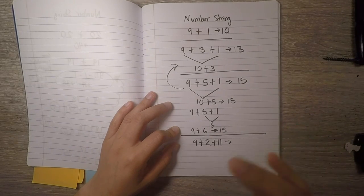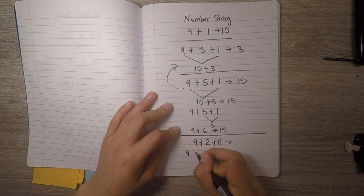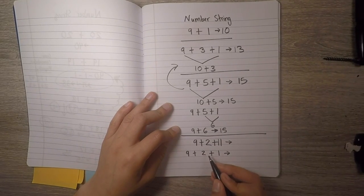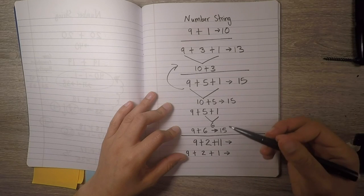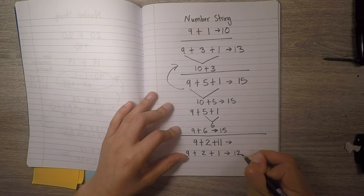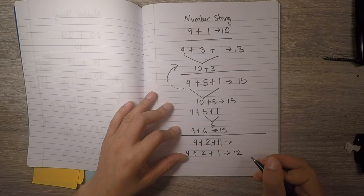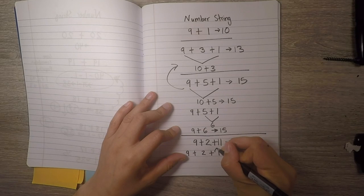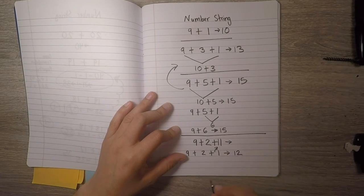So, if you solve the initial number sentence I showed you, you probably said, Ms. Suarez, that was easy. It's even easier than nine plus five plus one. That is twelve. But think about this, mathematicians.